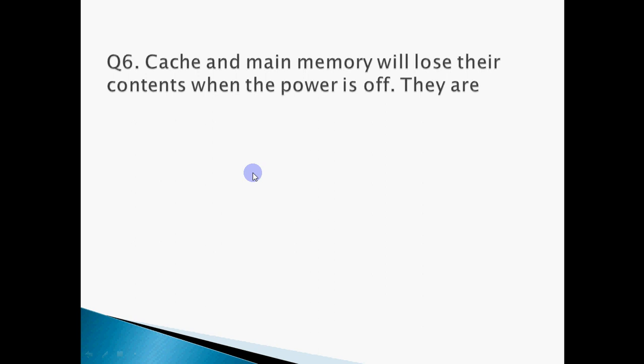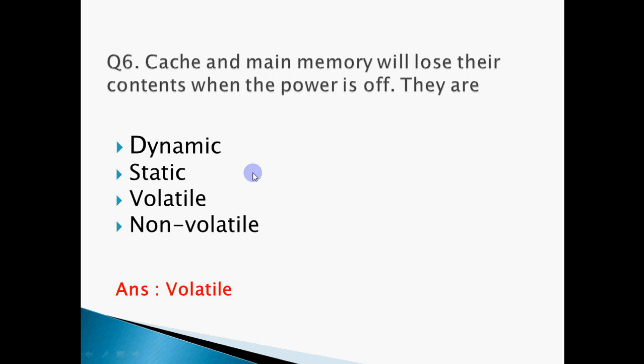Next question: Cache and main memory will lose their contents when the power is off. So which type of memory is this? The answer is volatile memory. Volatile memory is memory where contents exist only as long as power is on — as soon as power is off, the contents are erased.